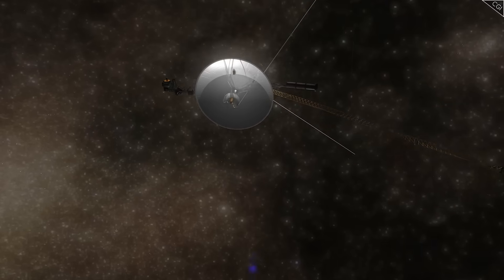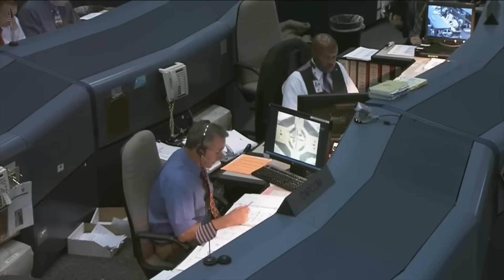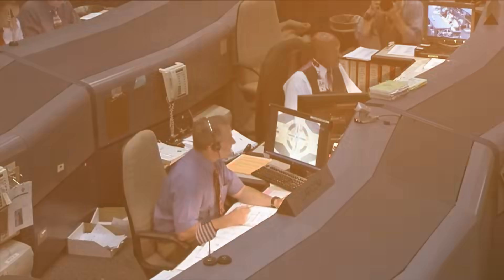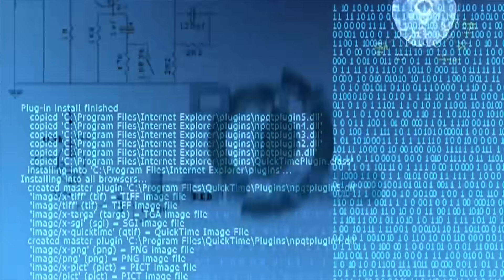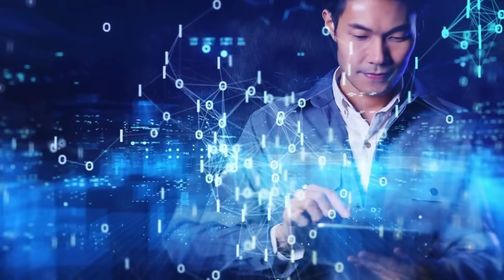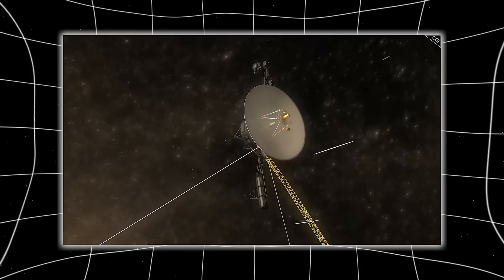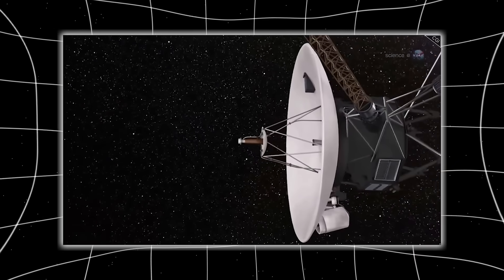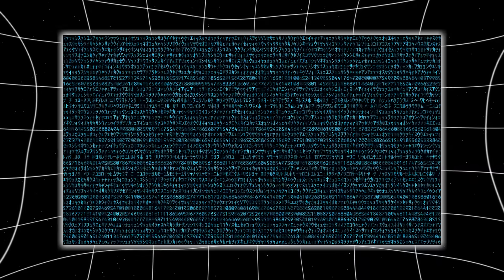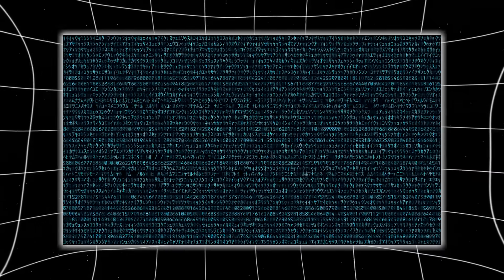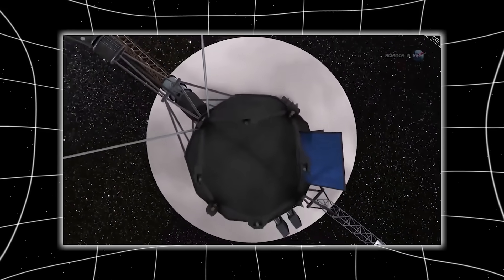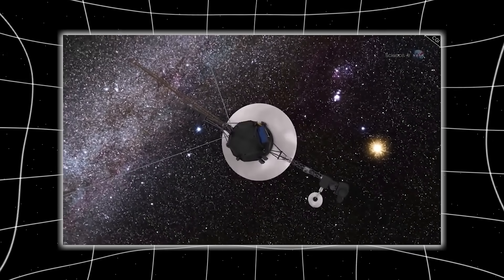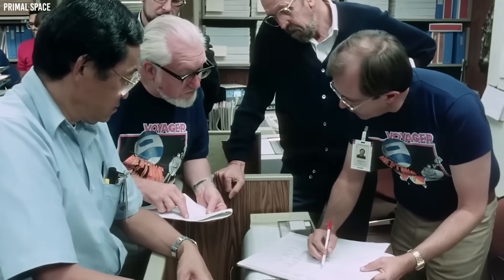Shortly after the interaction spike between Voyager 1 and 3i Atlas, NASA's Deep Space Network registered an unexpected anomaly. The Voyager transmission logs included a packet of data that didn't match the original code framework embedded in its onboard systems. When engineers attempted to decode the sequence, something shocking happened. The system began rewriting its own decoding protocol. This had never occurred before in the probe's 48-year history. The software, originally limited to 8-bit telemetry interpretation, suddenly produced 128-bit outputs, as if the transmission itself had carried an instruction set to upgrade the receiver's capability remotely. It was like giving a calculator a new operating system, not through hardware, but through pure signal.